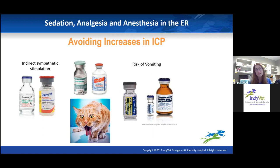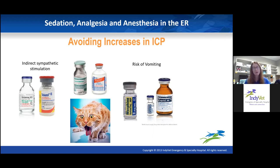Dexmedetomidine — alpha-2s are the number one emetic. Xylazine particularly causes about 90% of cats to vomit. It does cause an increase in blood pressure followed by secondary reflex bradycardia. I would use dexmedetomidine in a hit by car at low doses, but in cats I really don't want to cause vomiting. I wouldn't use it alone in a dog hit by car, and I wouldn't use it at high doses. In cats I'd consider avoiding it, or use something to prevent vomiting before administering the alpha-2.